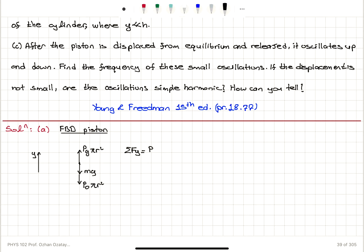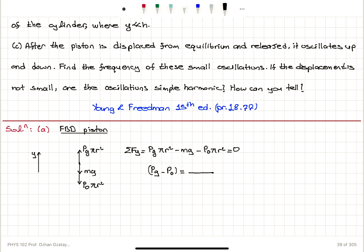There is the outside pressure p0, which is force per area, so p0 times pi r squared pointing down. There is the gas pressure pointing up, so gas pressure times pi r squared is the force pointing up. The motion of the piston is on the y-axis. The net force on the y-axis is: pressure of the gas times pi r squared, minus the weight of the piston, minus outside pressure times pi r squared, equals zero.